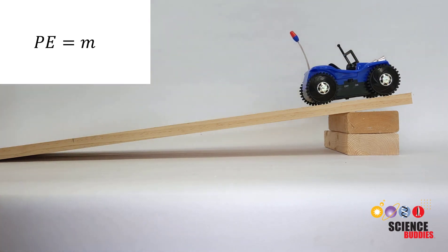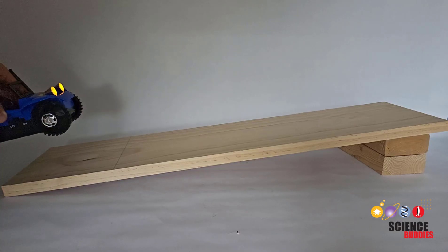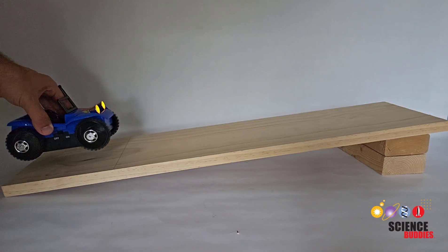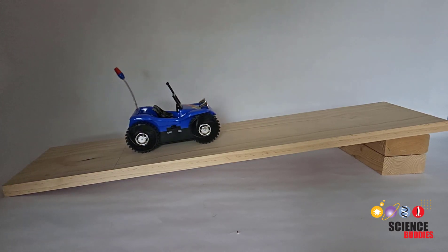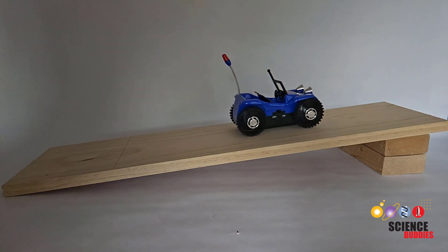The change in potential energy equals mass times gravity times the change in height. You can measure the change in height from the start line to the end of the ramp. It's important to note that this is the vertical change in height and not the distance along the length of the ramp. We're also making the simplifying assumption that the car immediately accelerates to full speed, so we're ignoring changes in kinetic energy between the bottom and top of the ramp.